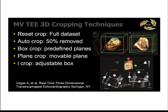For cropping, once you have a full data set, pressing auto crop gives you 50% of that data set — more applicable to LV volumes than mitral valve volumes. Box crop works like a cube where you can move the faces independently to trim away unwanted data. For a free crop, plain crop removes a different portion. iCrop on the Phillips machine is an adjustable box — you can rotate and adjust it to display a 3D rendering of any volume you want. Play with these tools so you can use them when describing pathology.